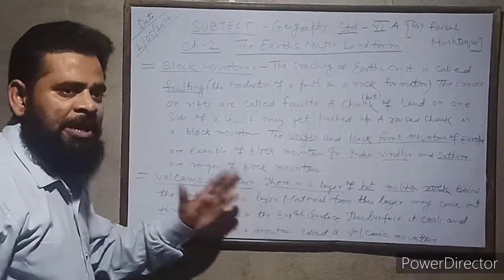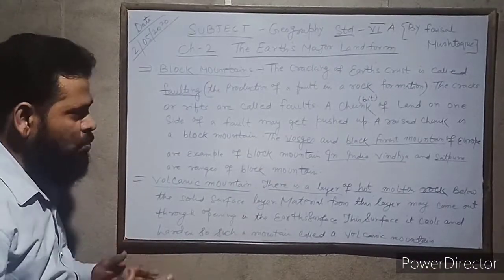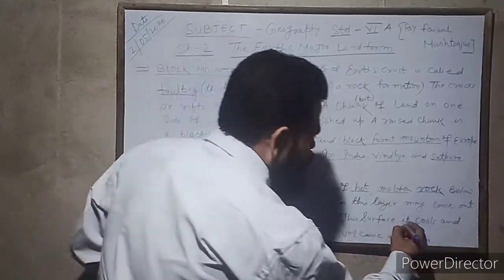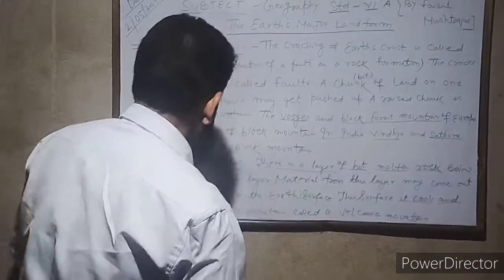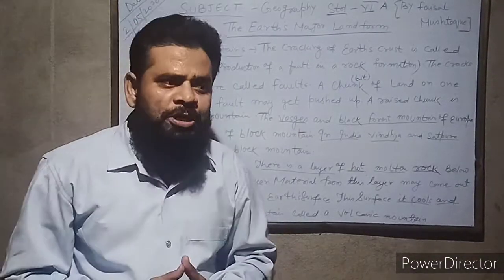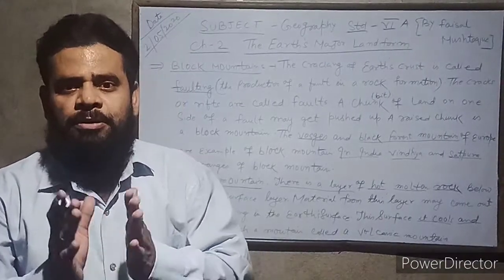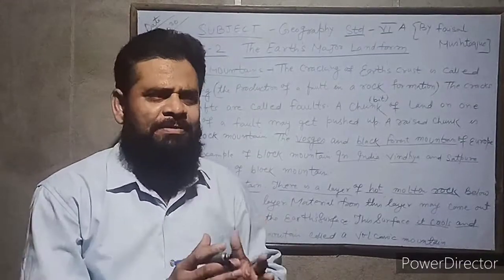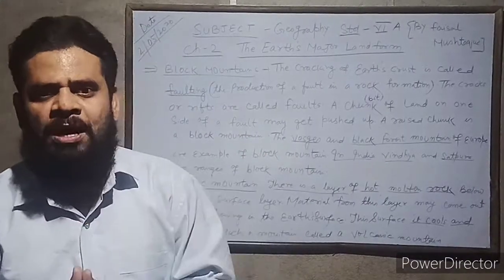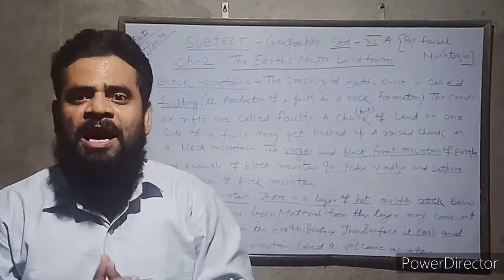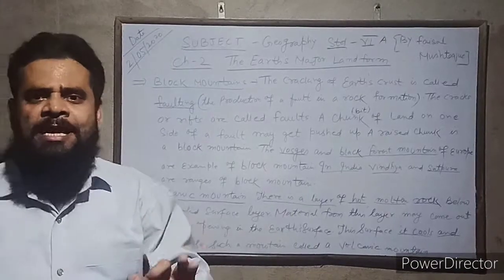Hot molten rock material from the layer below the solid surface of the earth is thrown out through an opening in the earth's surface. When it reaches the surface, it cools and hardens. Such a mountain is called a volcanic mountain. These mountains are formed when magma — molten rock deep within the earth — erupts and comes up through pipes or openings on the surface. Magma is called lava when it breaks through the earth's crust.